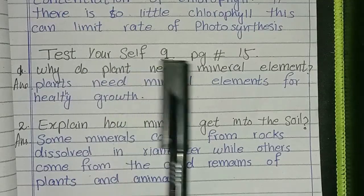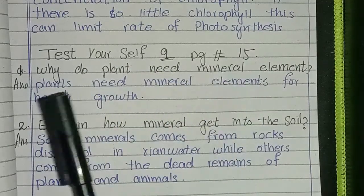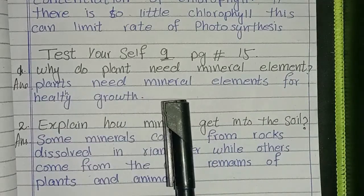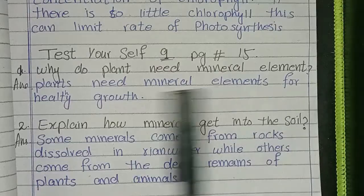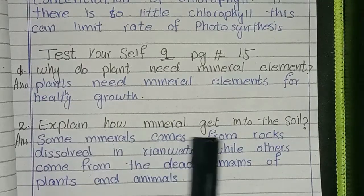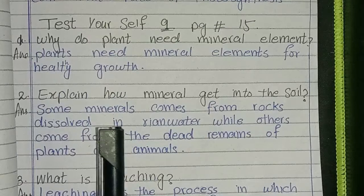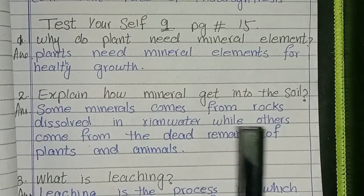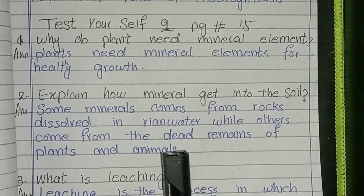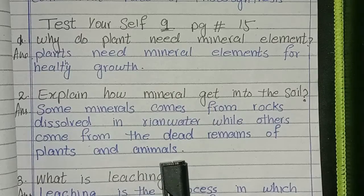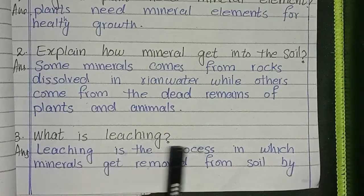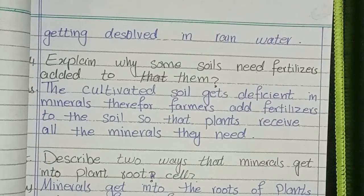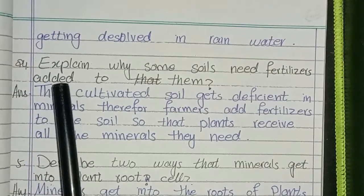9th Test Yourself, page 15. Why do plants need mineral elements? Plants need mineral elements for healthy growth. Explain how minerals get into the soil. Some minerals come from rocks dissolved in rainwater, while others come from the dead remains of plants and animals. What is leaching? Leaching is a process in which minerals are removed from the soil by dissolving in rainwater.